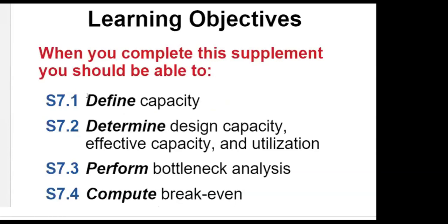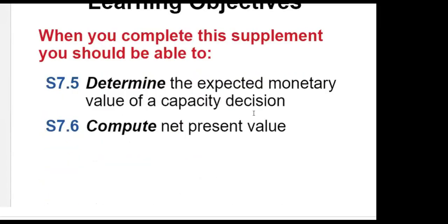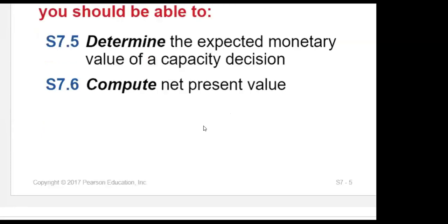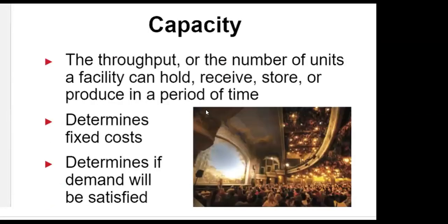The learning objectives are: you will learn design capacity, effective capacity, and utilization. We'll talk about bottleneck analysis, break-even analysis, expected monetary value, and net present value. The throughput — the number of units a facility can hold, receive, store, or produce in a period of time — can be considered as capacity. It determines the major part of your fixed costs and determines if demand will be satisfied.